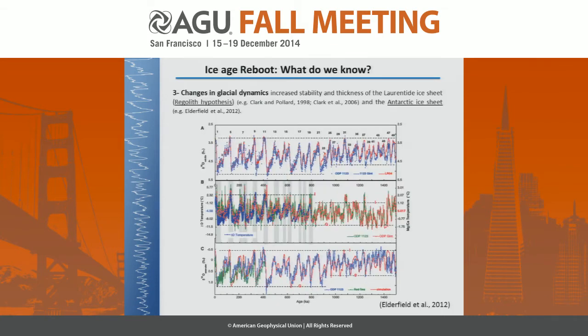In the third group of hypotheses, we may have changes in glacial dynamics. Important in this category are the increased stability and thickness of the Laurentide ice sheets — the so-called regolith hypothesis — but also more recently, work by Harry Elderfield and others highlighted the importance of the Antarctic ice sheet and how the stability of this big ice mass might have impacted the MPT.